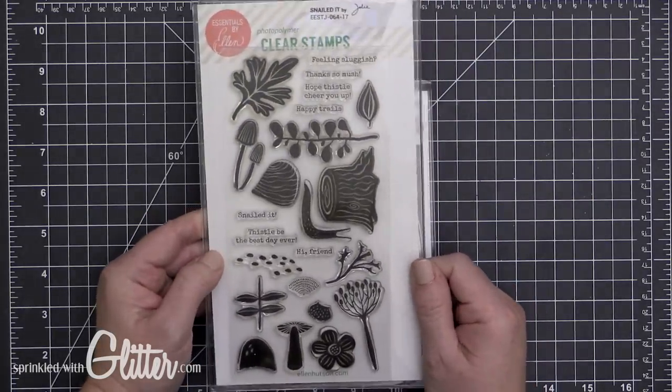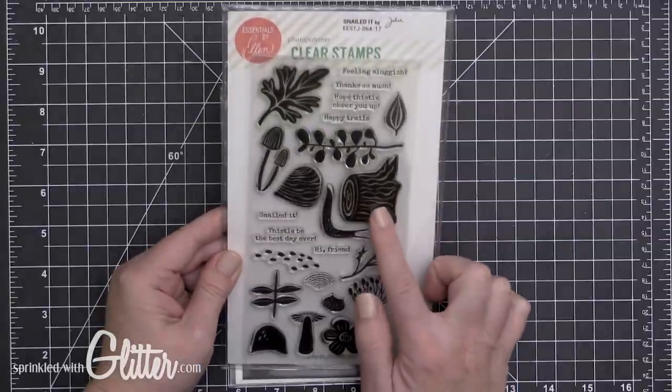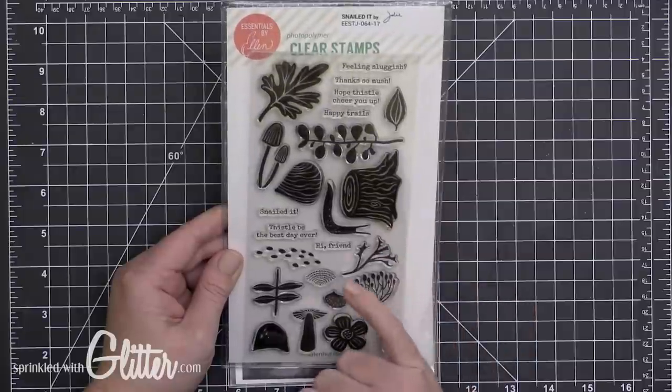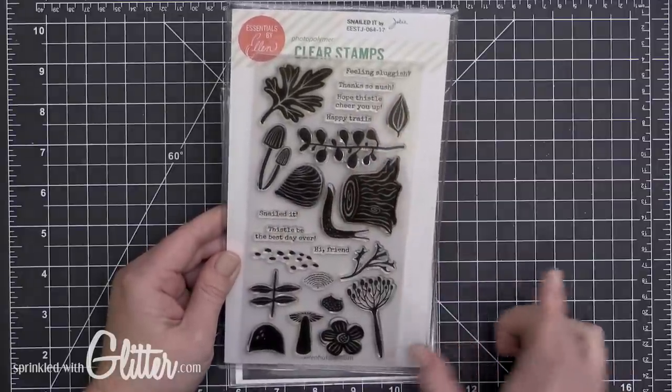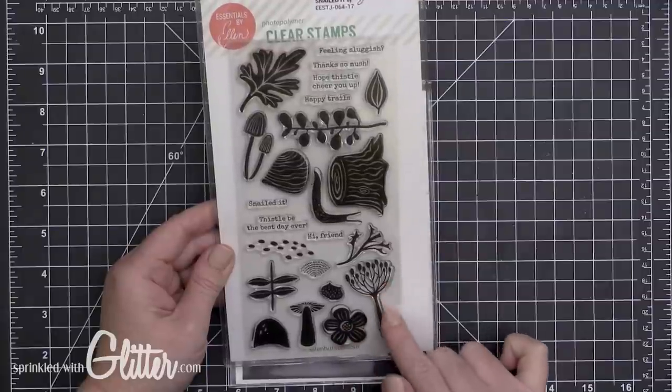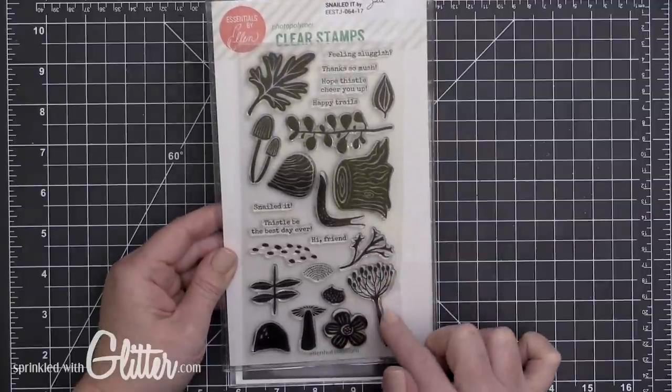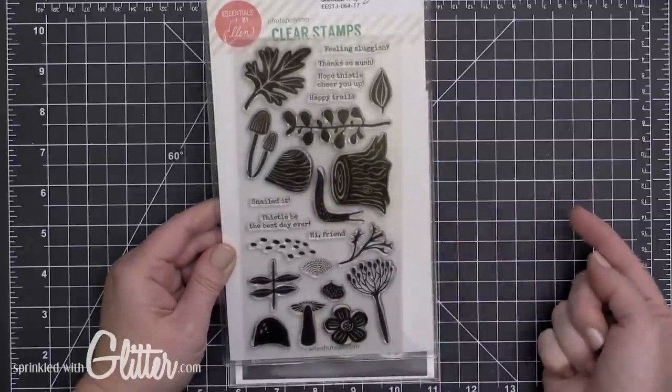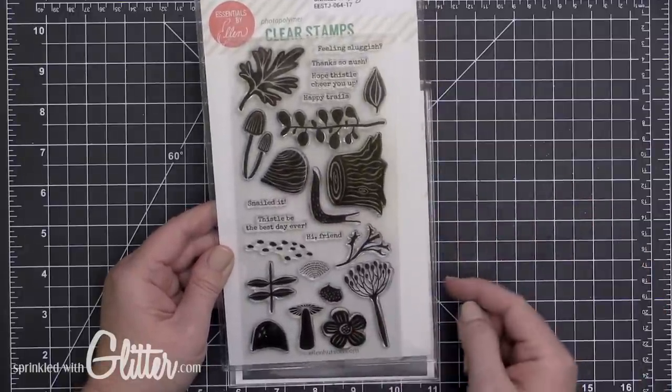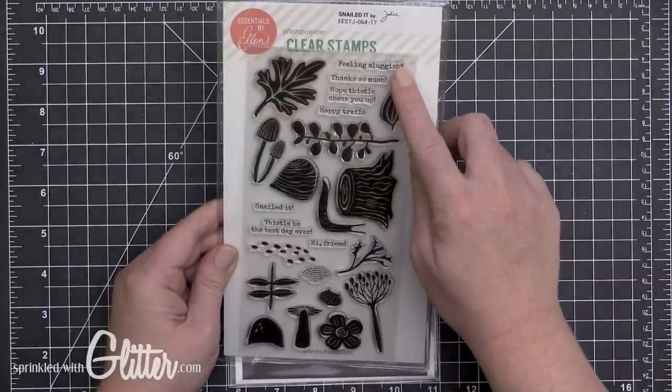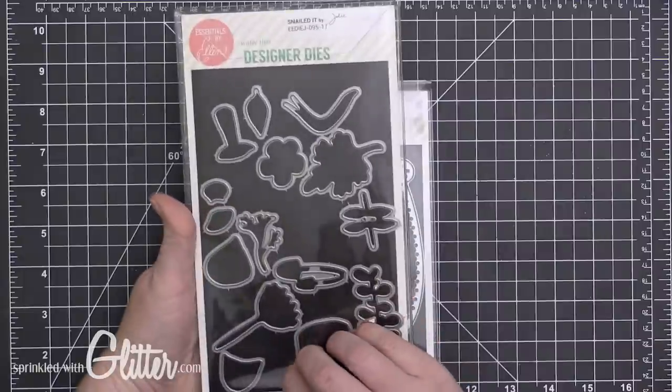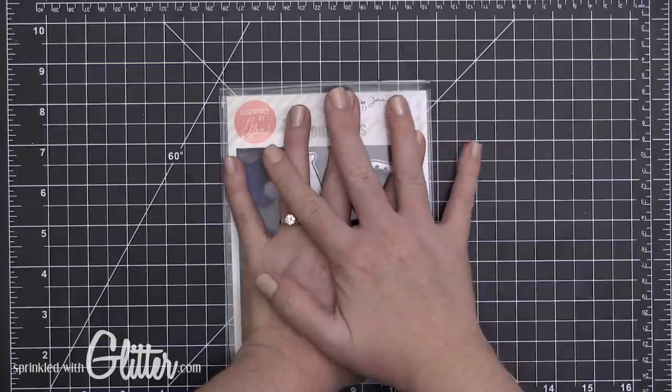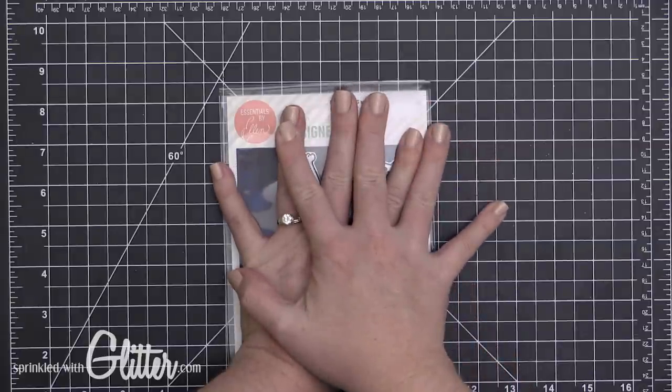Next up we have Snailed It. My favorite image in this entire stamp set is this stump here. I think it is so cool. The thing I like about this stamp set is there's some very elegant feeling images, but there is a certain whimsy to the stamp set as well. I think that mushroom is so cute. There are coordinating sentiments as well which say like 'Thanks so much' and 'Feeling sluggish.' Once again, there are coordinating dies, and now I'm going to cover this up for the big reveal, the piece de resistance.